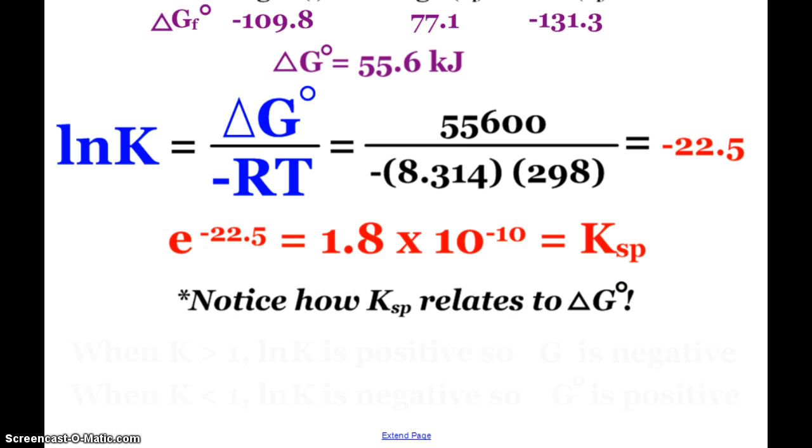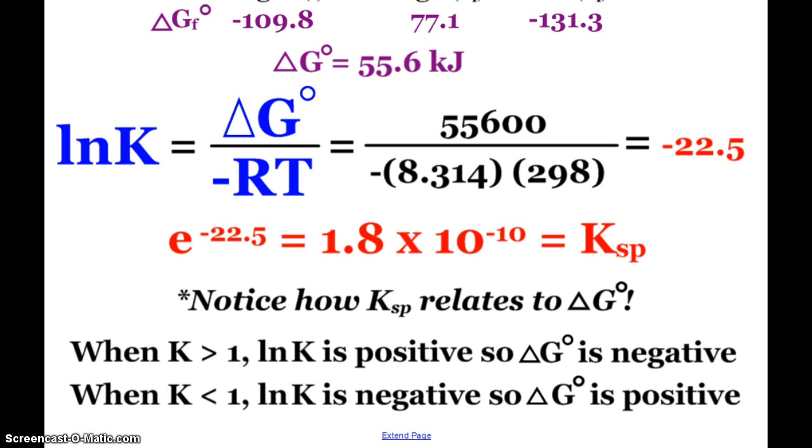There's one little relationship you can notice. When K is greater than one, natural log of K is positive. So in order for that to be true, delta G has to be negative because negative divided by negative would give us the positive. When K is less than one, natural log of K ends up being negative. So delta G in that instance has to be positive since the bottom of our expression is negative RT.